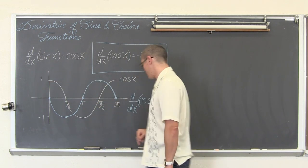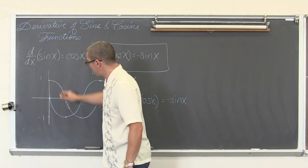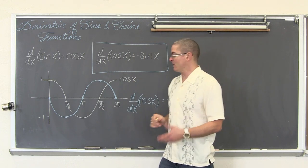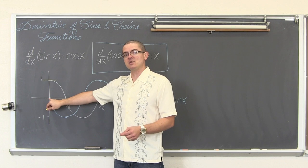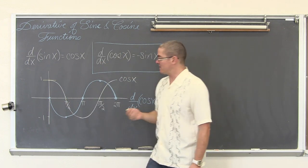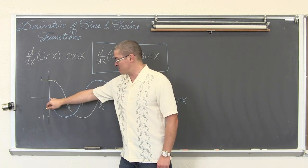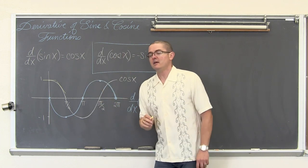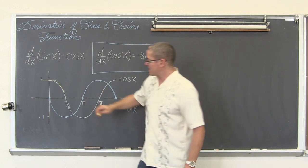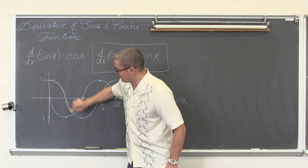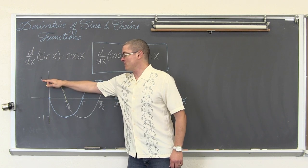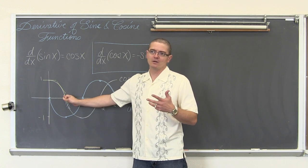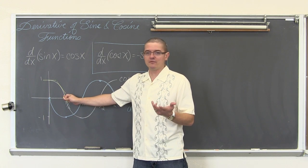At two pi you are back to one, finishing that full period of cosine. If I were to draw a tangent line at zero, that tangent line would have a slope of zero. Thus the derivative value at zero — the slope of cosine of x at zero — is going to be zero. Then you start to draw tangent lines anywhere along the curve and they are going to have a negative slope.